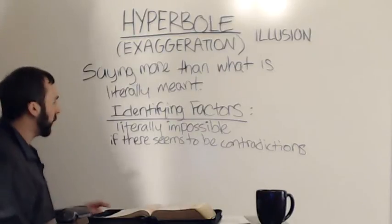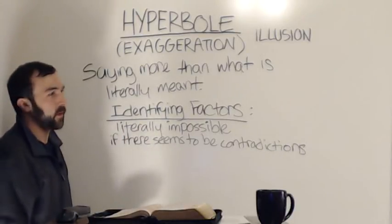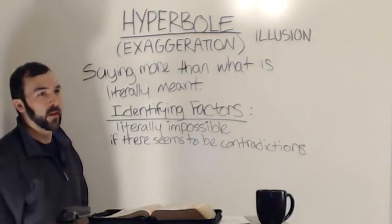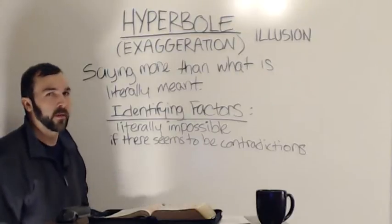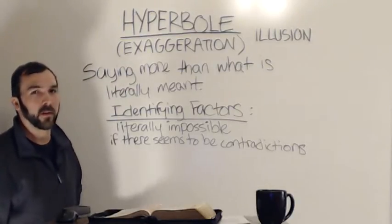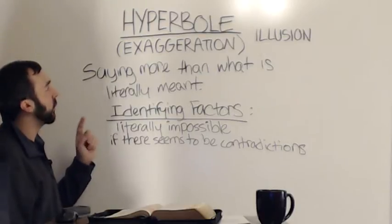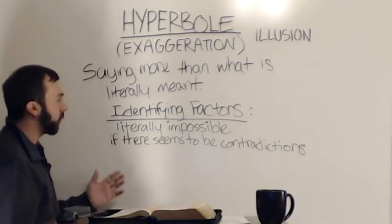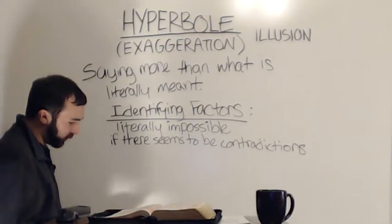The next identifying factor for hyperbole is if there seems to be contradictions. If somebody takes a hyperbole literally, we're going to run into contradictions in Scripture. We can run into serious errors by taking hyperbole literally. Not every verse that uses hyperbole, if misinterpreted, is always some kind of deadly heretical interpretation — but I would still correct somebody if I believe they're wrong. There are some verses we should seriously stand hard on understanding correctly, and I'm going to dedicate a part of this study to looking at verses that could cause contradictions if taken literally.